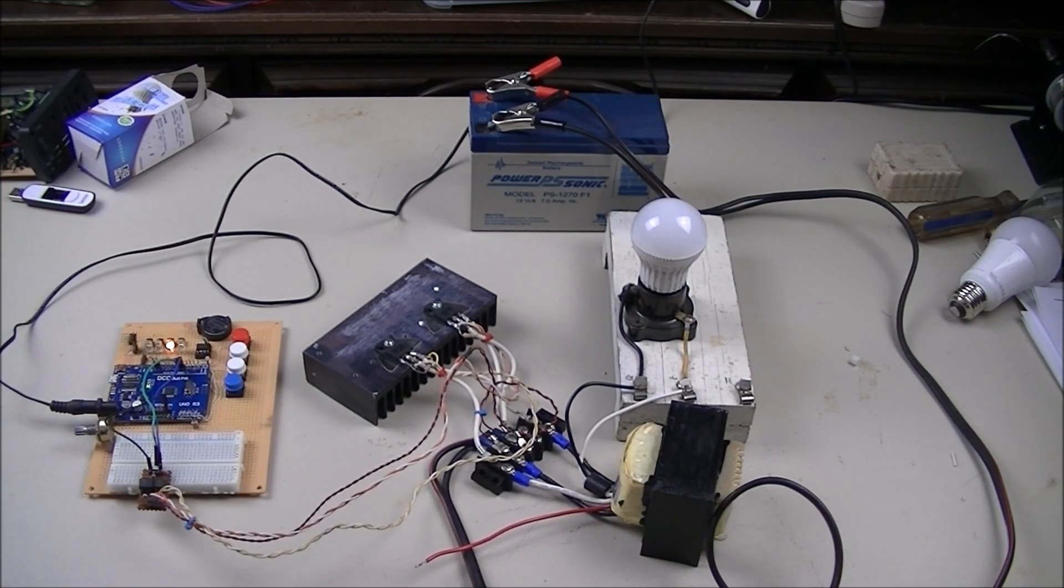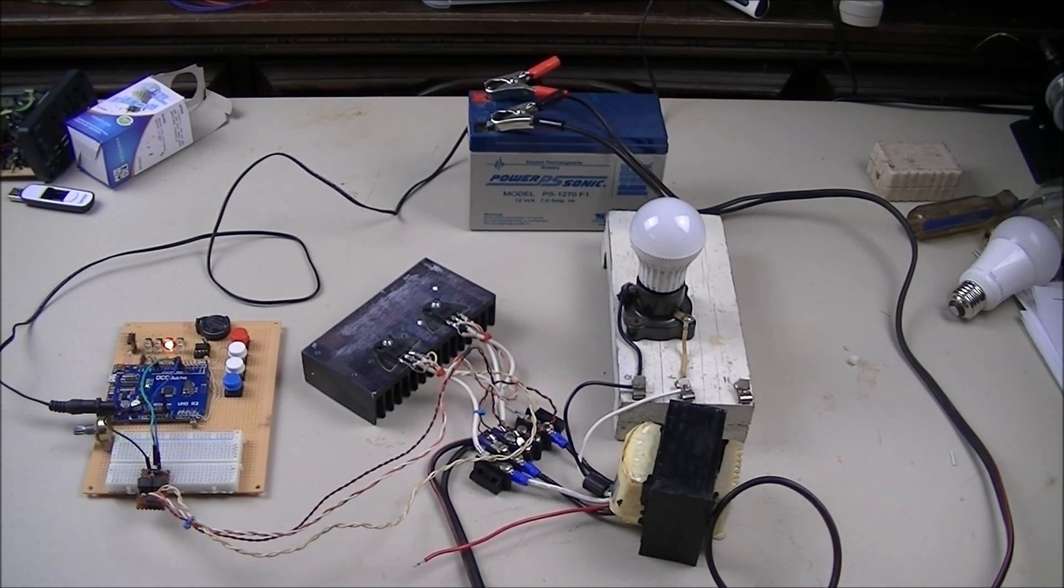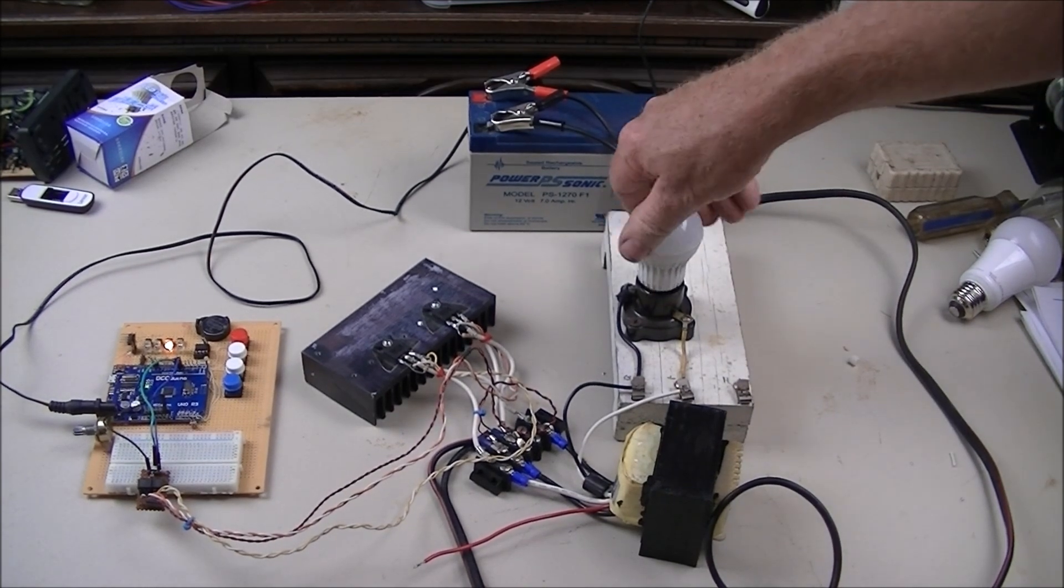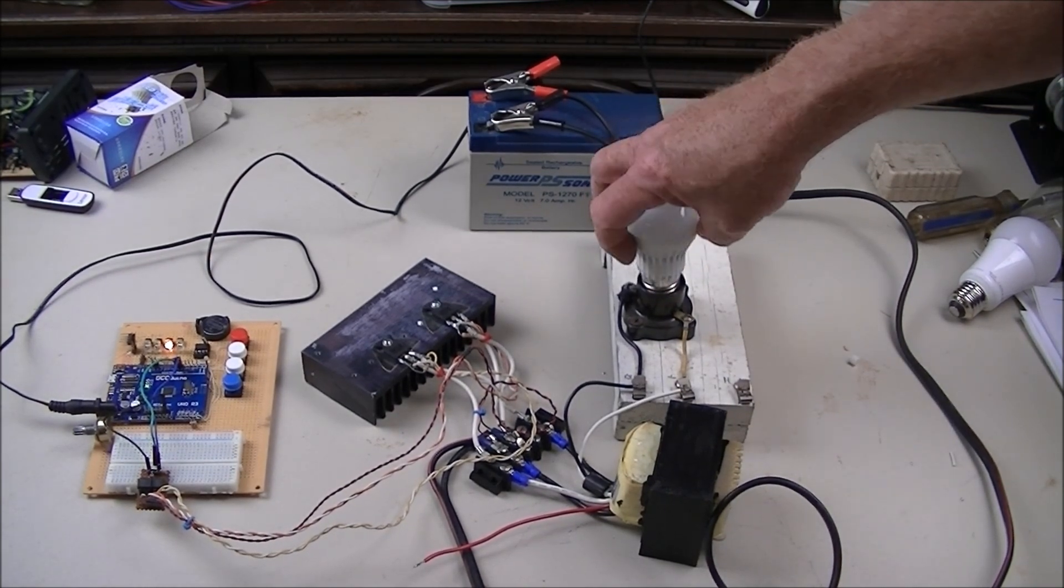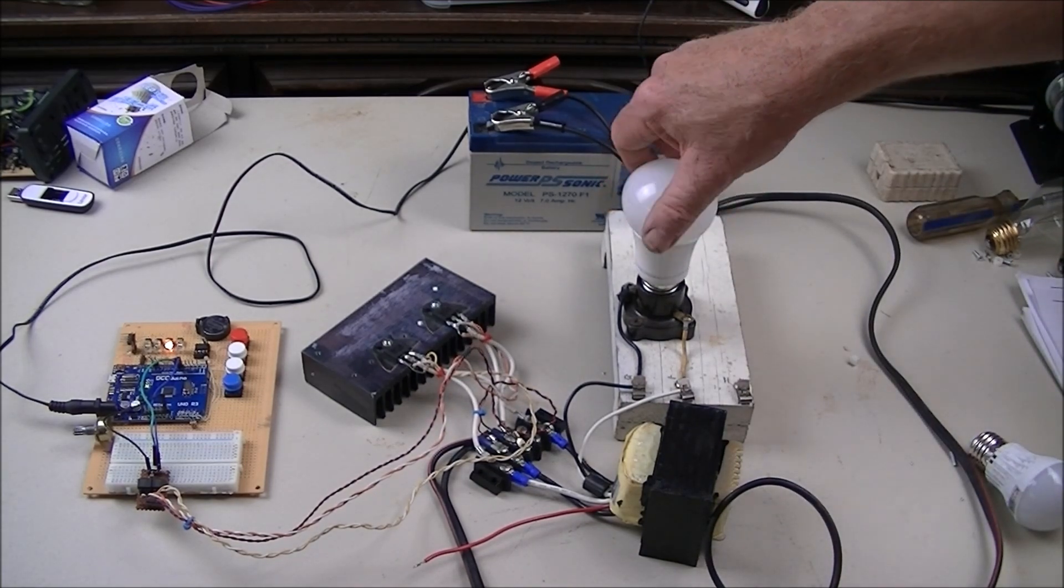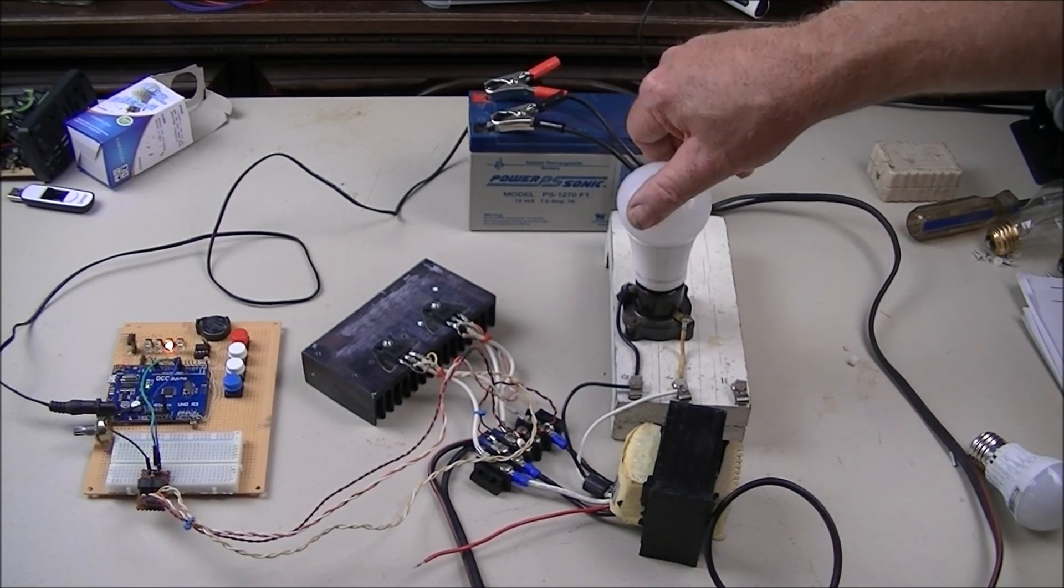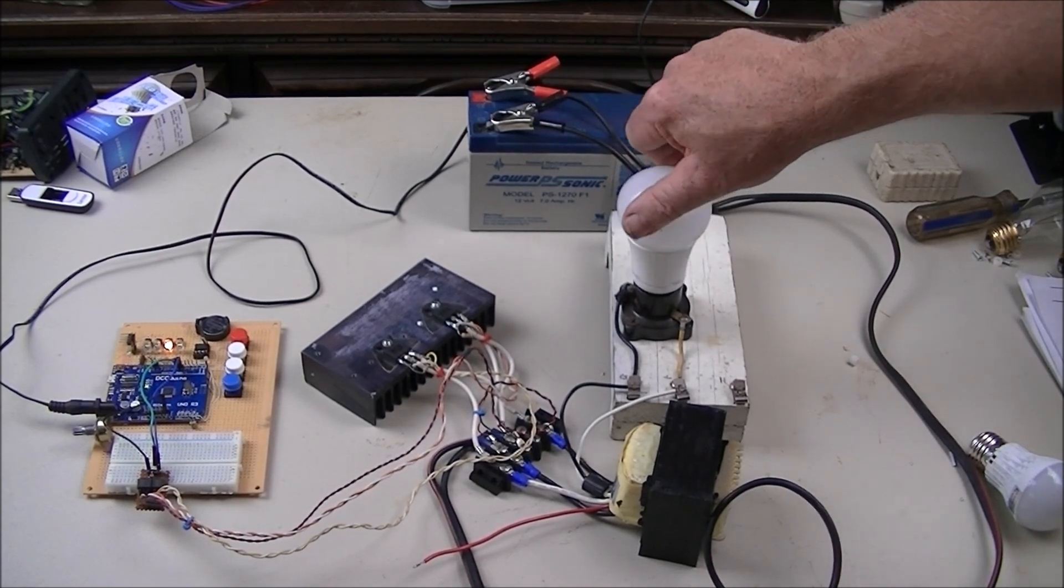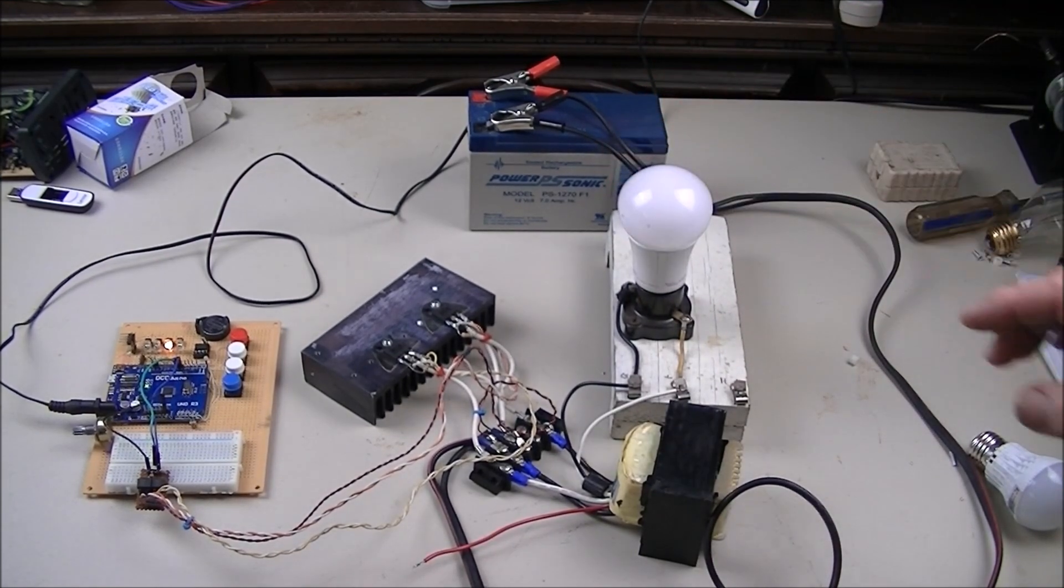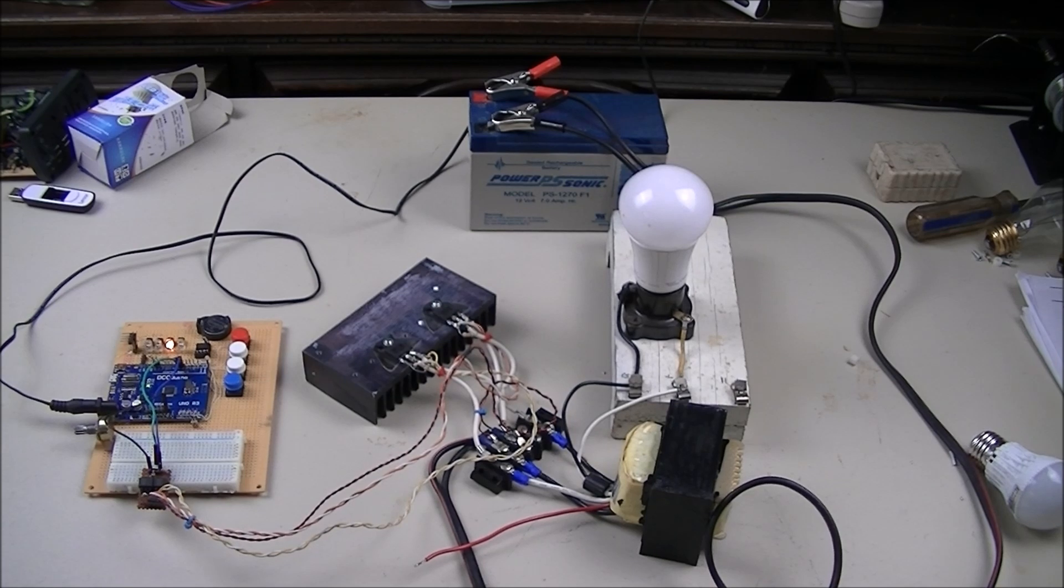Let's try another different bulb in it. That's a three-watter. This is a 60 watt equivalent and it will probably blind the camera. These are LED bulbs. It also works on incandescent, but LED bulbs are far more efficient and make more sense.